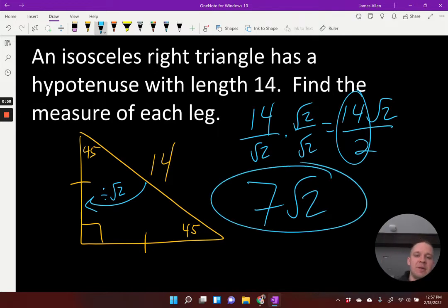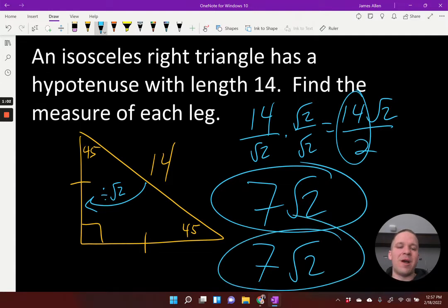Both legs are going to be the same. 7 root 2 and, just in case we wanted to write it twice, 7 root 2. They're going to be the same. It's isosceles. I figured it out. I figured it out and it was fantastic. Woo!